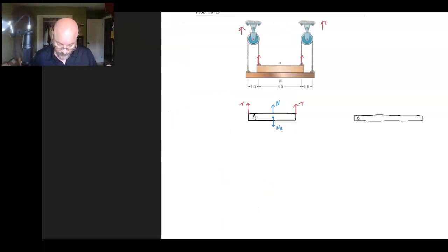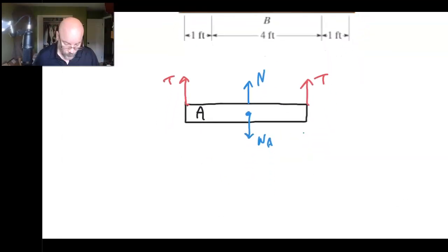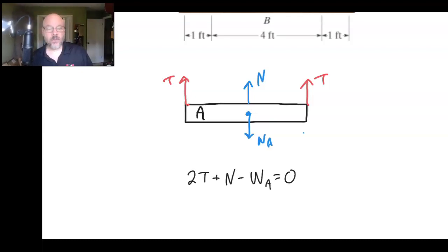And then, A is going to feel the force, a force from B. So it feels B pushing on it from below. So that's an upward force, we'll call that N. And so, if we want to write our algebraic relationship, then I've got two T's up, I've got the normal force up, and I've got the weight down. And so there's my equilibrium condition for plate A.